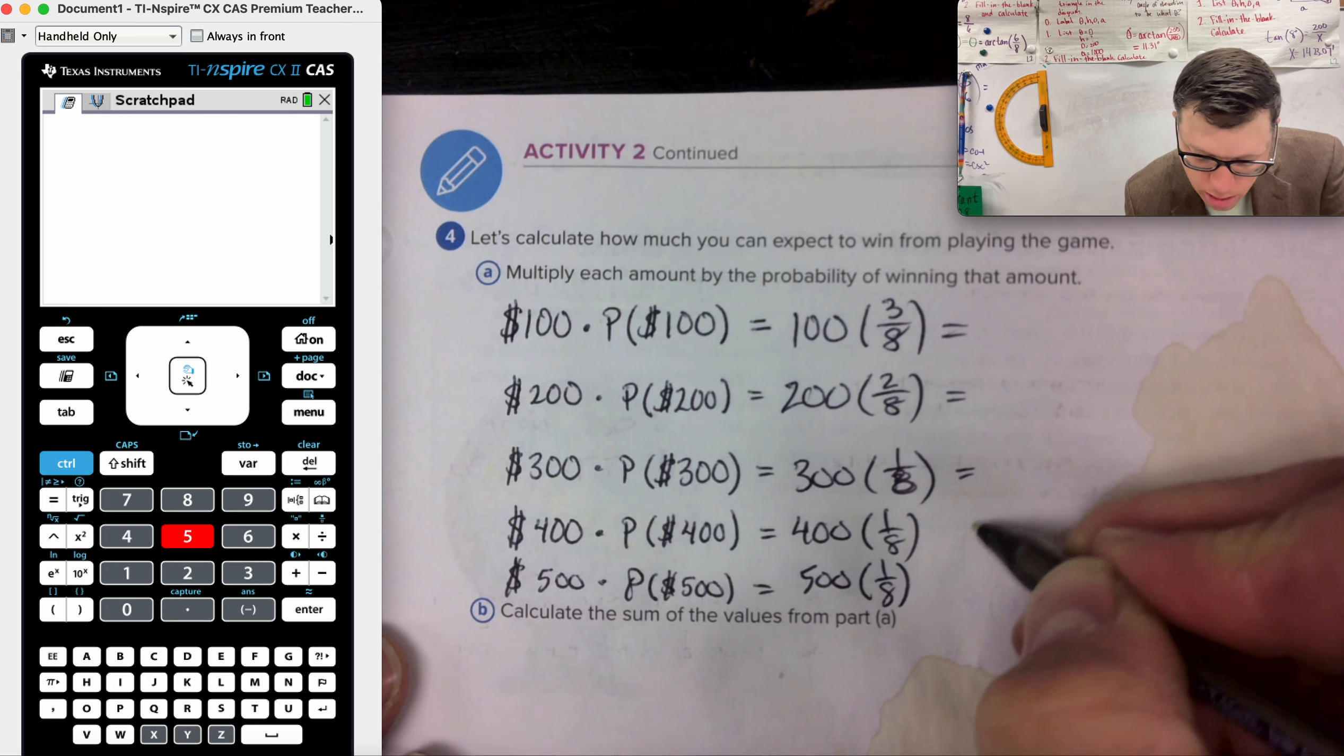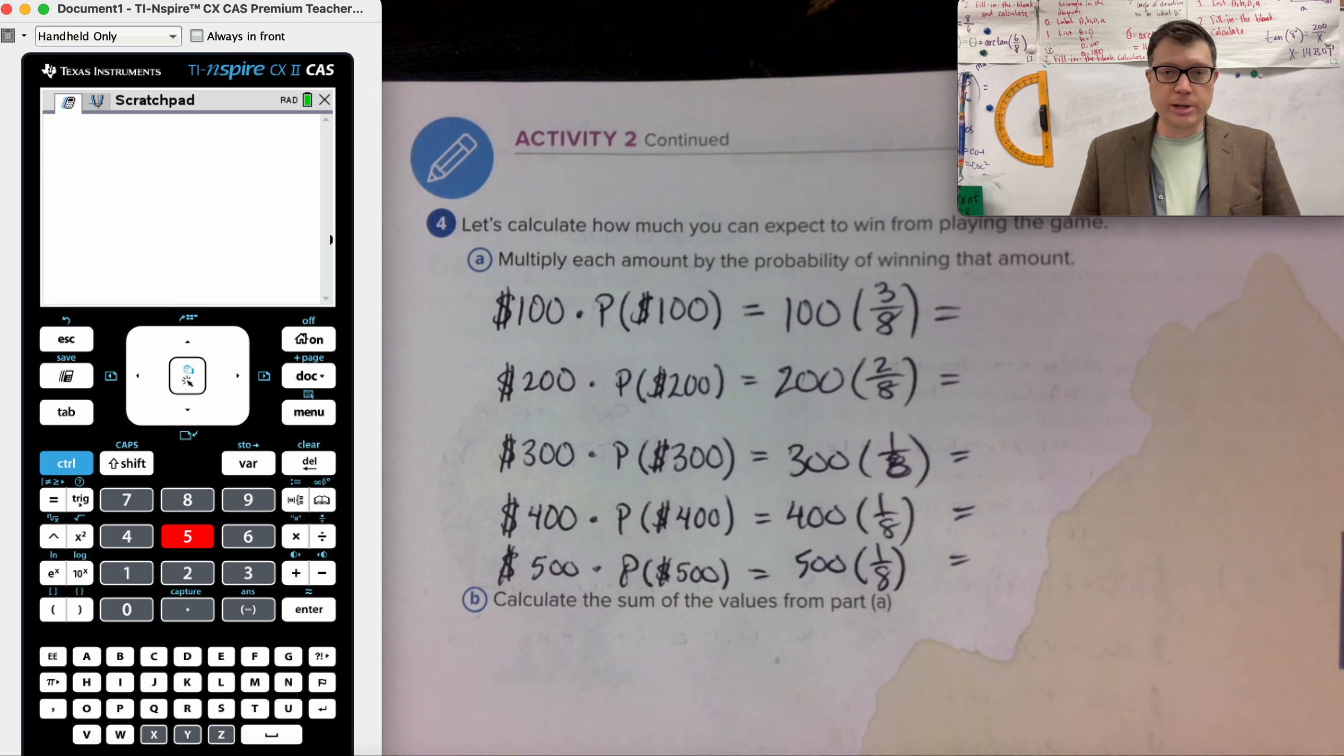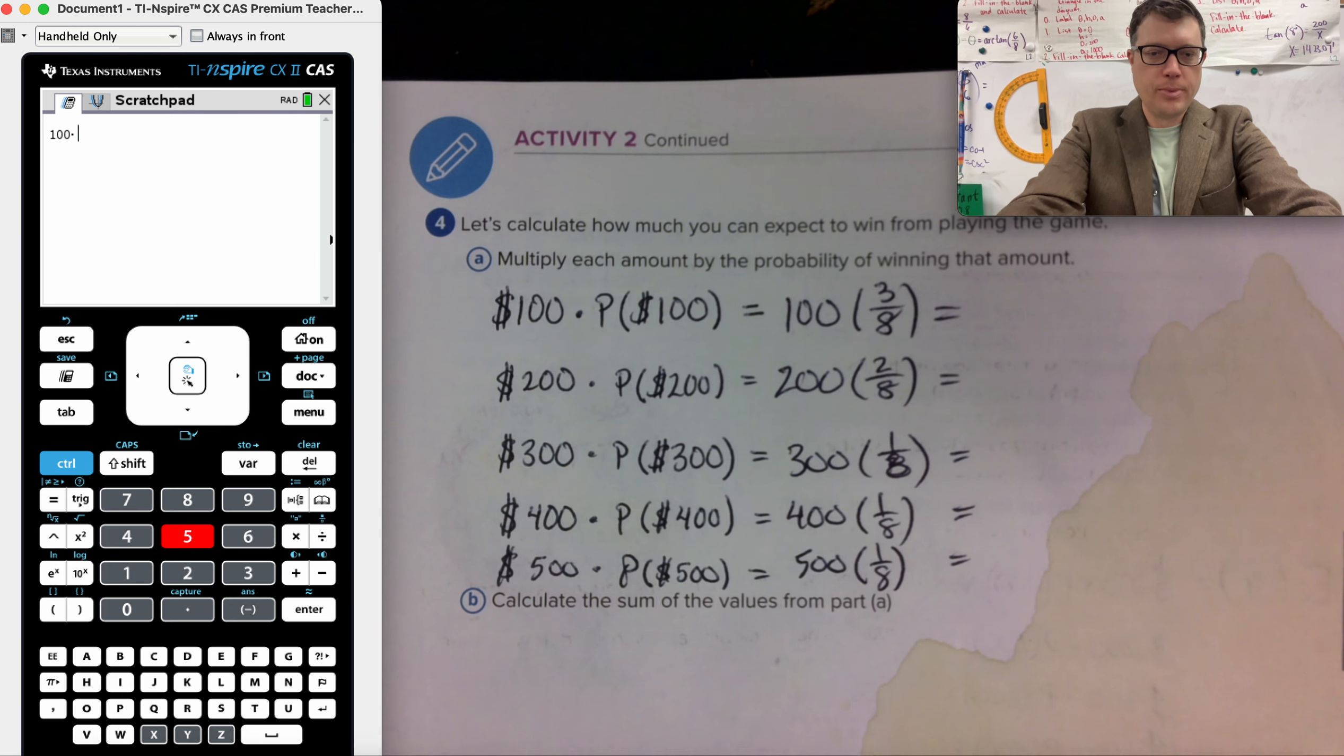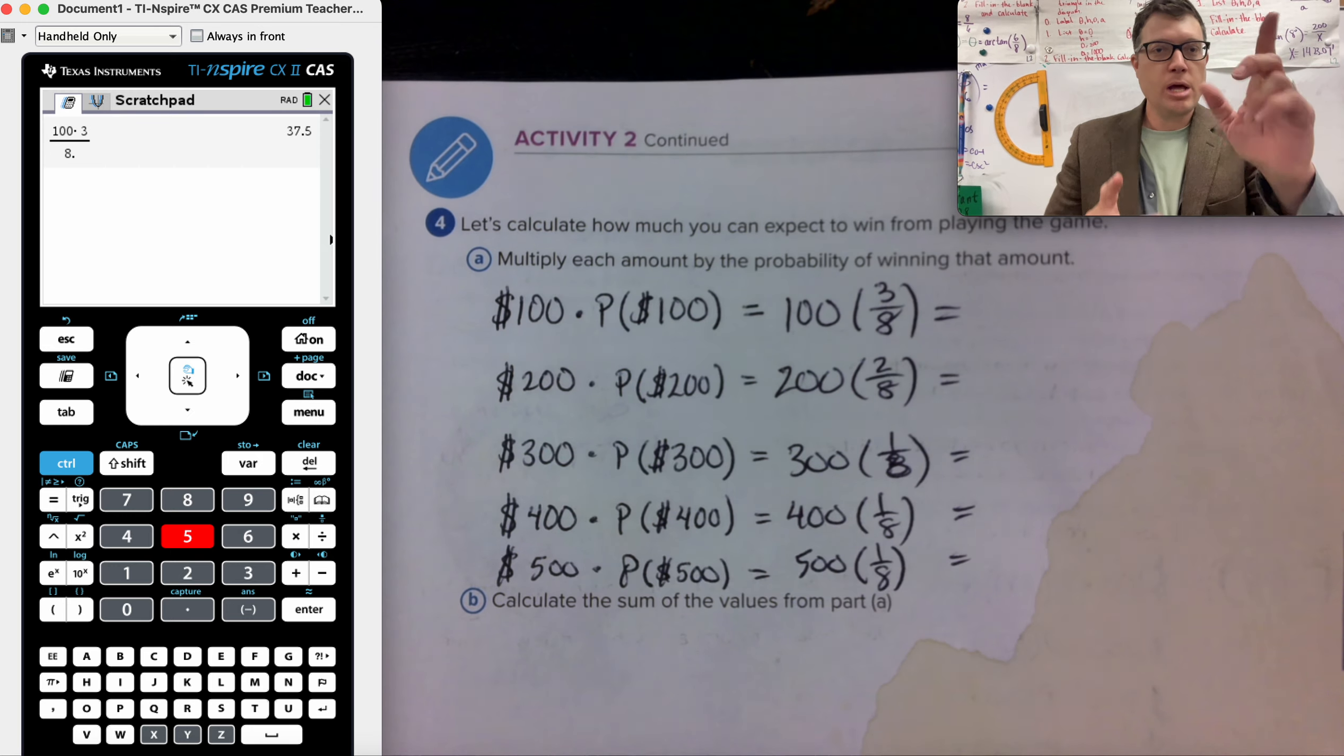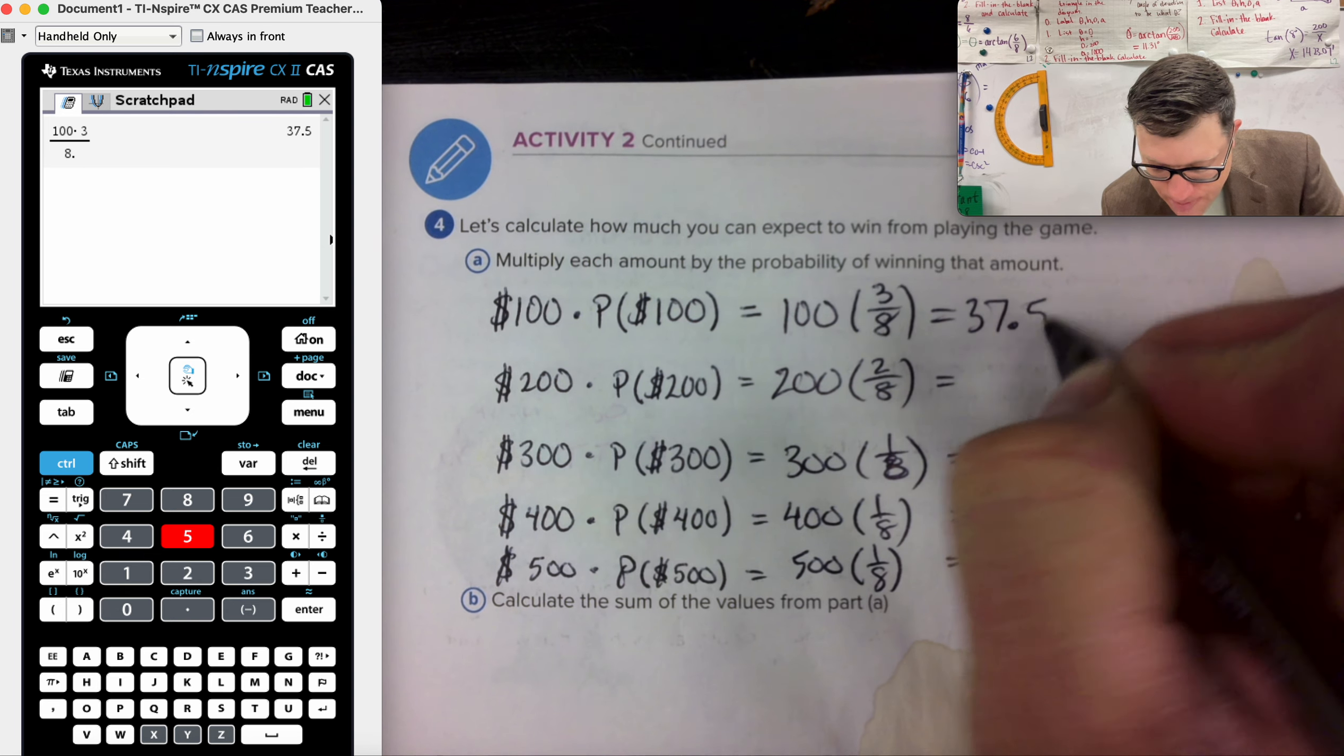So let's multiply all of these up. And that's what my calculator is for on the side of the screen. So 100 times three eighths. And then I'm going to use three eighths is three divided by eight. And I'm going to put a decimal point at the end of the eight. That way I get a decimal answer. 37.5.